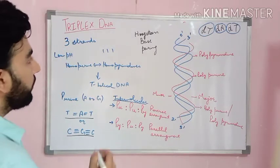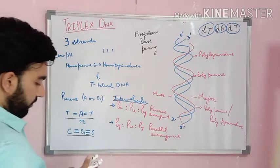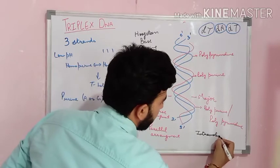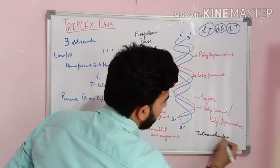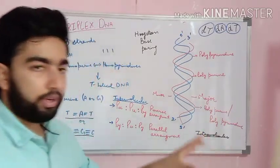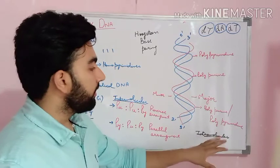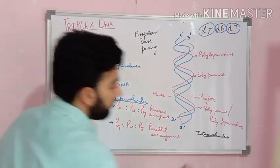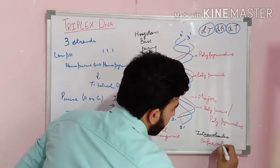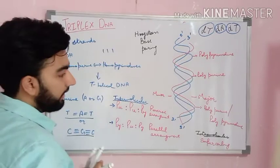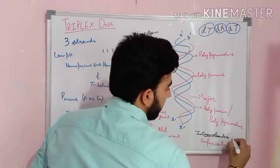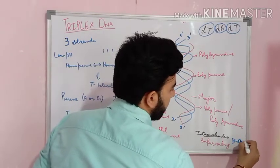In the case of intramolecular base pairing, it is formed between the homopurine and homopyrimidine during the supercoiling of the DNA. This type of intramolecular DNA is also known as H-DNA.